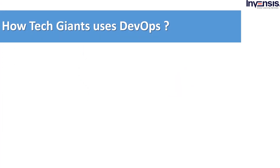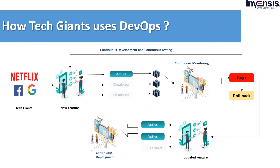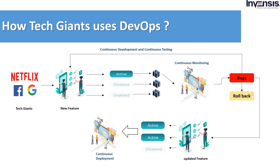Focusing on the image, any new features that these companies find are deployed to a small user base. Only one pipeline is active and the rest are disabled. They continuously monitor the specific user base on which the feature has been deployed to identify bugs and gather user feedback. The bugs are fixed and feedback is implemented through continuous development and continuous testing. After implementation, the updated features are deployed back to the same user base. This happens continuously until the features are stable and users are happy. Once stability is achieved, these features are deployed to multiple user bases by making other pipelines active. If users did not like the new feature, these companies can perform a rollback and remove it altogether.